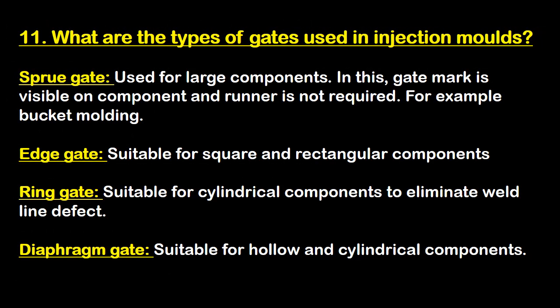Question eleven: what are the types of gates used in injection molds? First is sprue gate — used for large components; the gate mark is visible on the component and no runner is required, for example bucket molding. Second is edge gate — suitable for square and rectangular components. Third is ring gate — suitable for cylindrical components to eliminate the weld line defect. Fourth is diaphragm gate — suitable for hollow and cylindrical components.